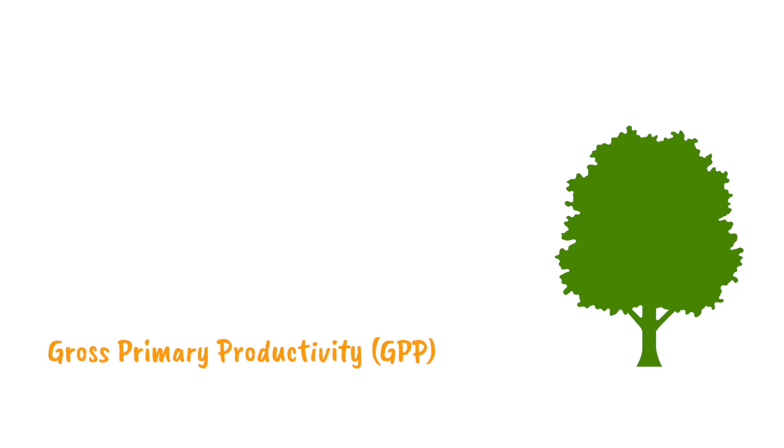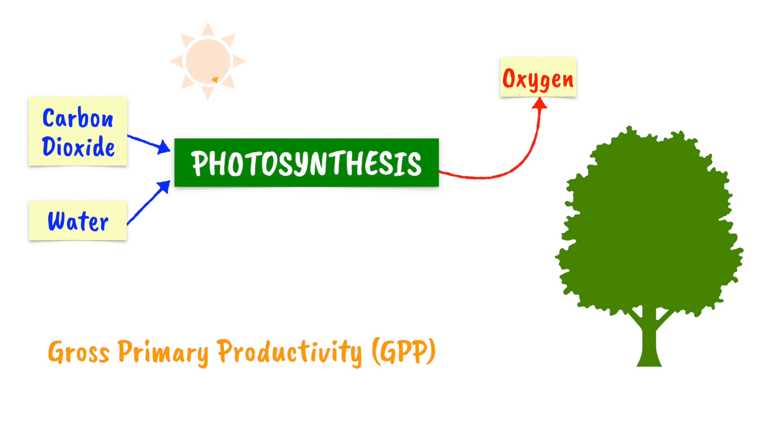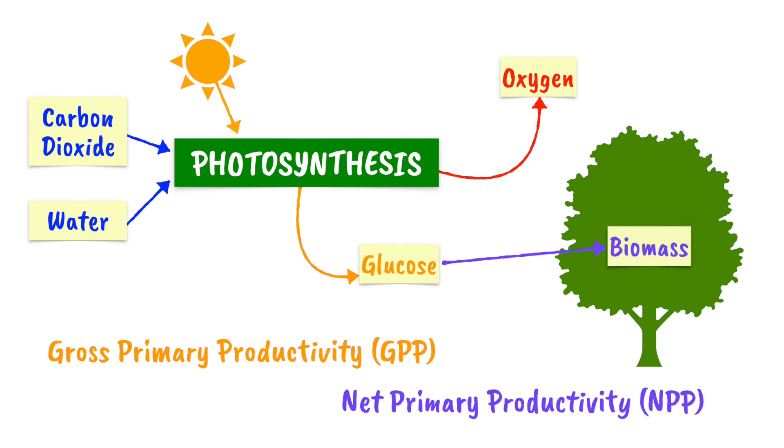Remember that gross primary productivity is the rate at which solar energy is converted into chemical energy by producers. Those producers may be trees, phytoplankton, anything that carries out photosynthesis.